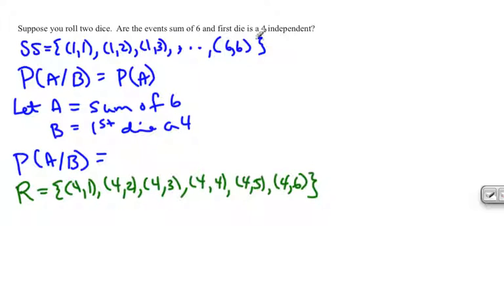Now out of this restricted sample space, the way to get a sum of 6 is just this one outcome. There's one way for this to happen out of six possible outcomes, so the probability is 1/6.